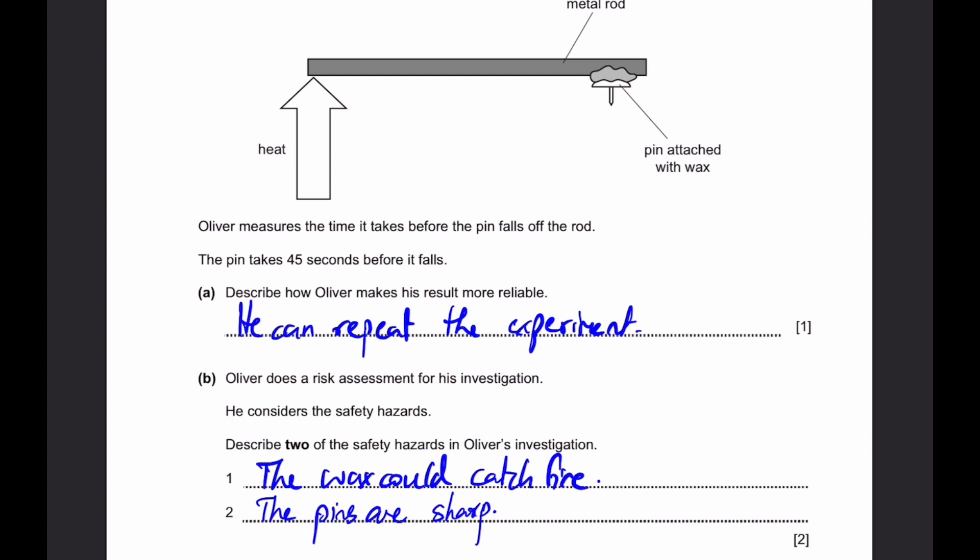Part B: Oliver does a risk assessment for his investigation. He considers the safety hazards. Describe two of the safety hazards in Oliver's investigation. So, first of all, it's safety hazards, not precautions. And which is why we need to only write what could happen. We cannot write how to prevent what could happen. So, simple first thing is the wax could catch fire from the heat which is supplied if the metal rod burns, of course. And then, the second is the pins are sharp so you could get poked in the finger or even any other place. It's very dangerous. And there's actually one more which is the fact that the metal rod can burn your fingers or any other part, because of course there's a lot of heat being supplied to it.